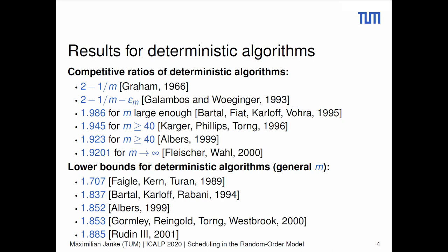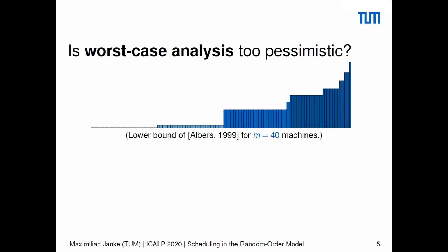So instead of closing this gap, we want to ask a question which has been asked quite often in theoretical computer science: whether worst-case analysis is too pessimistic. I would like to intuit this using the lower bound of Albers, which shows that no online algorithm on a multiple of 40 machines can be better than 1.885-competitive. No deterministic online algorithm can be better than 1.885-competitive, either on this sequence or on a prefix of it. But the question is: how fragile is this sequence? Does it need to be precisely the way it is?